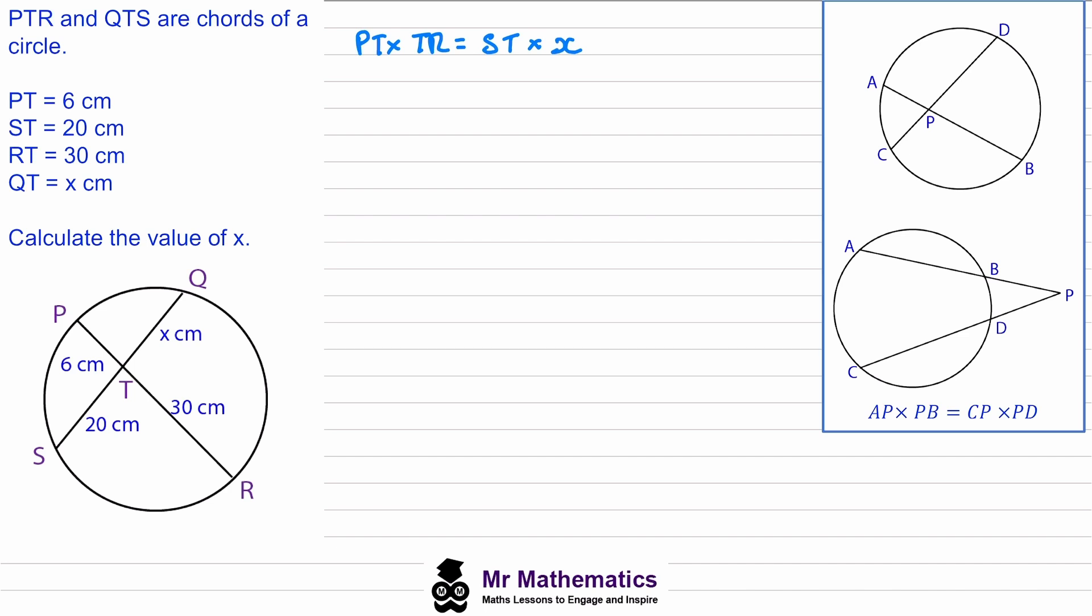So now we can substitute in our values. PT we know is 6, TR we know is 30. So we've got 6 times 30 will equal 20 times x.